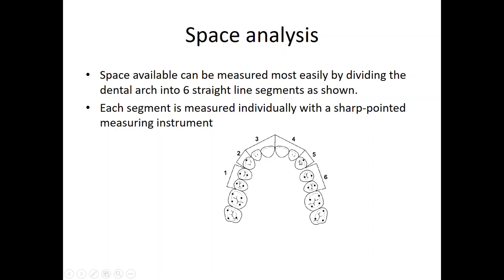These six segments are measured at the buccal side within the embrasure — not occlusally, not lingually or palatally, but buccally. We measure each of the six segments and add them together; the result is the space available.